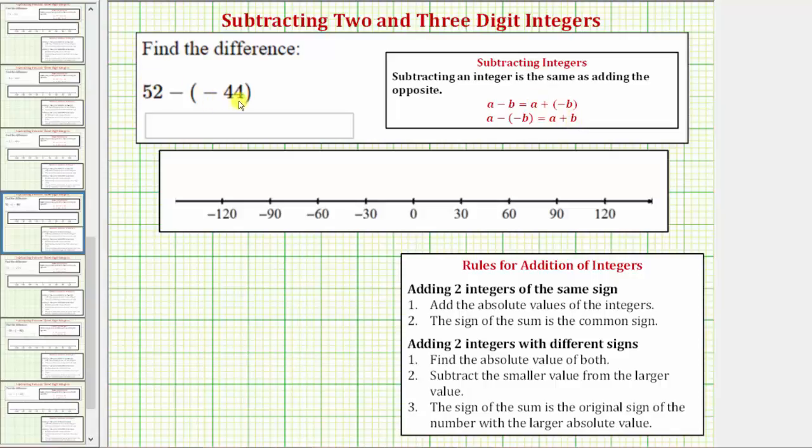subtracting negative 44 is the same as adding positive 44. So we can write 52 minus negative 44 as 52 plus positive 44.